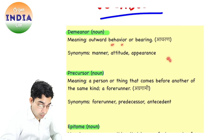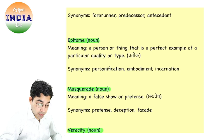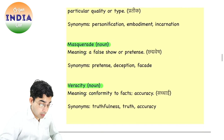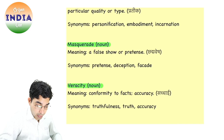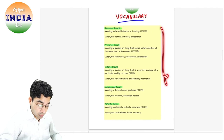आज की vocabulary है: Demeanor — इसका मतलब होता है आचरण, outward behavior or bearing. Precursor का मतलब होता है अग्रगामी, forerunner — a person or thing that comes before another of the same kind; predecessor. Epitome का मतलब होता है प्रतीक — a person or thing that is a perfect example of a particular quality or type; personification, embodiment, incarnation. Masquerade का मतलब होता है छद्म — false show or pretense, deception, facade. Veracity का मतलब होता है सच्चाई — truthfulness, accuracy, facts. ये vocabulary words हैं आज के लिए.